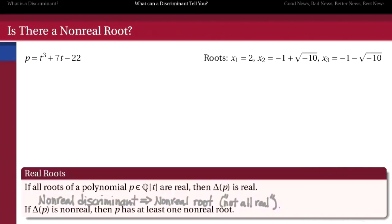So there are three things that discriminants can do for us for any polynomial. When the discriminant is zero, we have a repeated root, at least one. When the discriminant is irrational, we have at least one irrational root. And if the discriminant is not real, we have at least one non-real root. So the discriminant looks like a great thing in general.